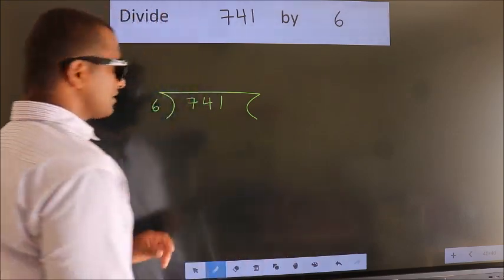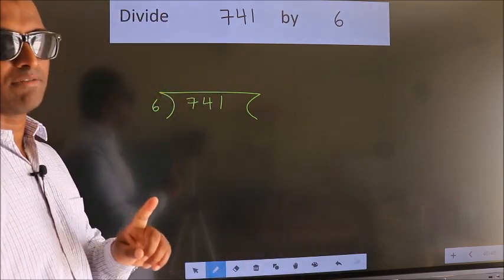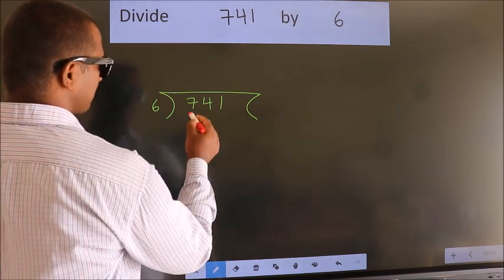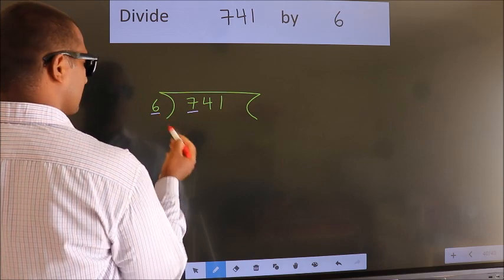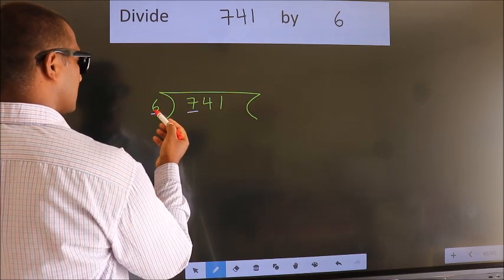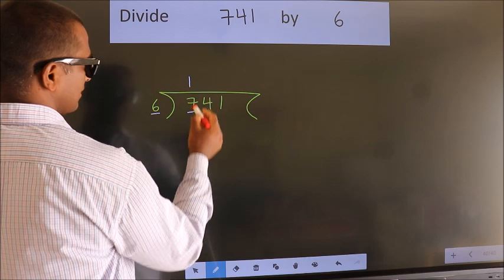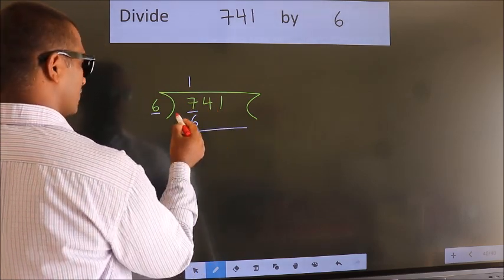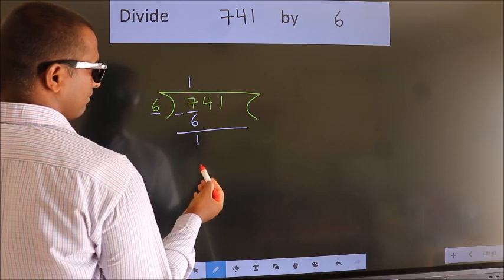This is your step 1. Next, here we have 7, here 6. A number close to 7 in the 6 table is 6 once 6. Now, we should subtract. We get 1.